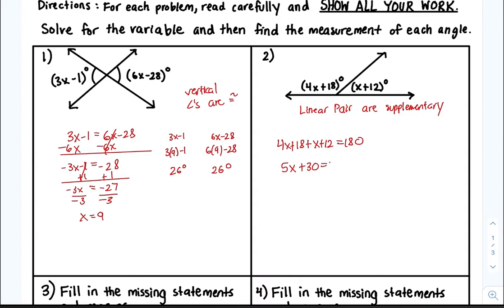So we have 5x plus 30 is equal to 180. Subtract 30 from both sides: 5x is equal to 150. Divide both sides by 5, and x is going to equal 30.